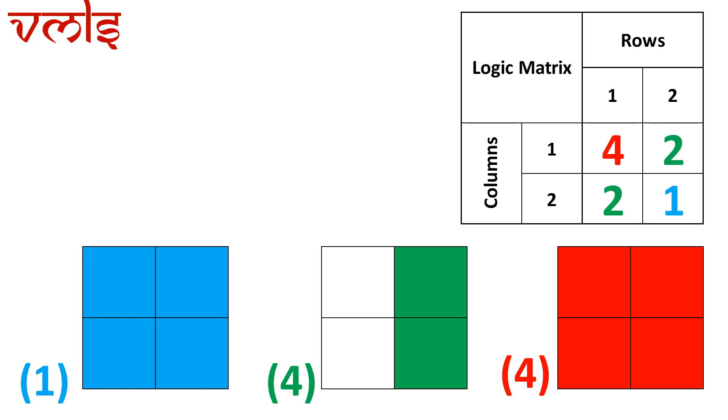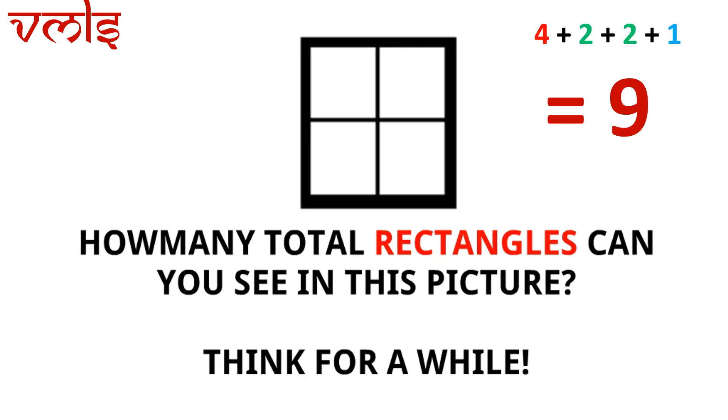So in total when we count, we've got nine rectangles in the matrix of 2 by 2 kinds of square. Now how many total rectangles could we see in this picture? So the answer was 9 and we are all very clear how did we get that.